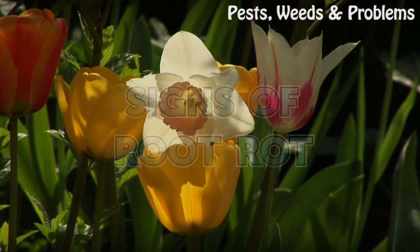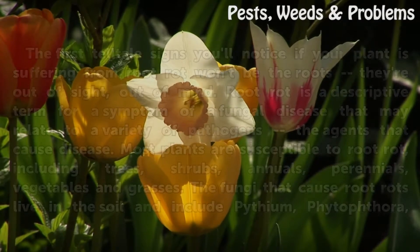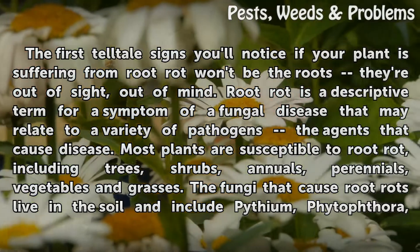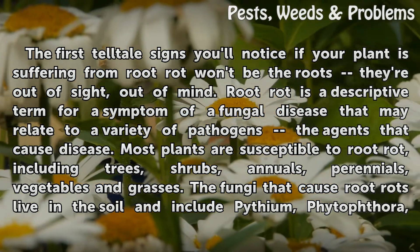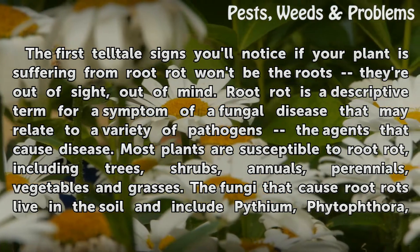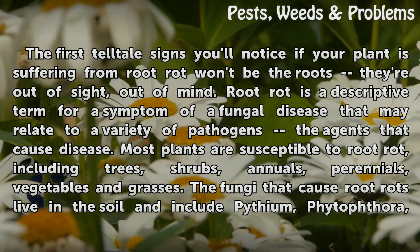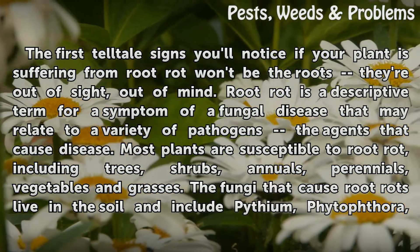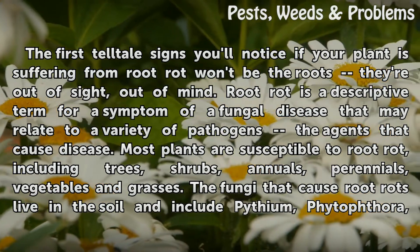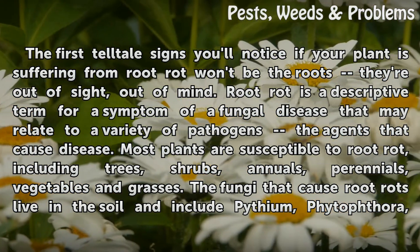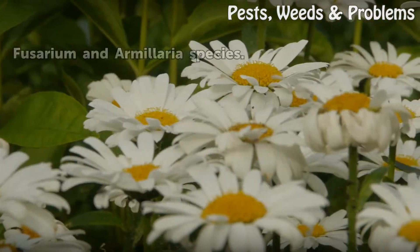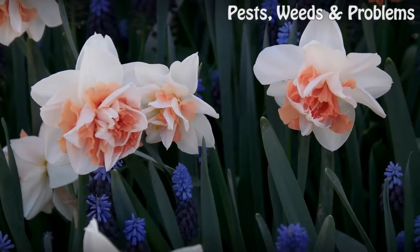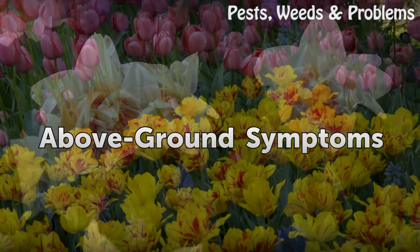Signs of root rot: the first telltale signs you'll notice if your plant is suffering from root rot won't be the roots — they're out of sight, out of mind. Root rot is a descriptive term for a symptom of a fungal disease that may relate to a variety of pathogens, the agents that cause disease. Most plants are susceptible to root rot, including trees, shrubs, annuals, perennials, vegetables, and grasses. The fungi that cause root rots live in the soil and include Pythium, Phytophthora, Fusarium, and Armillaria species.